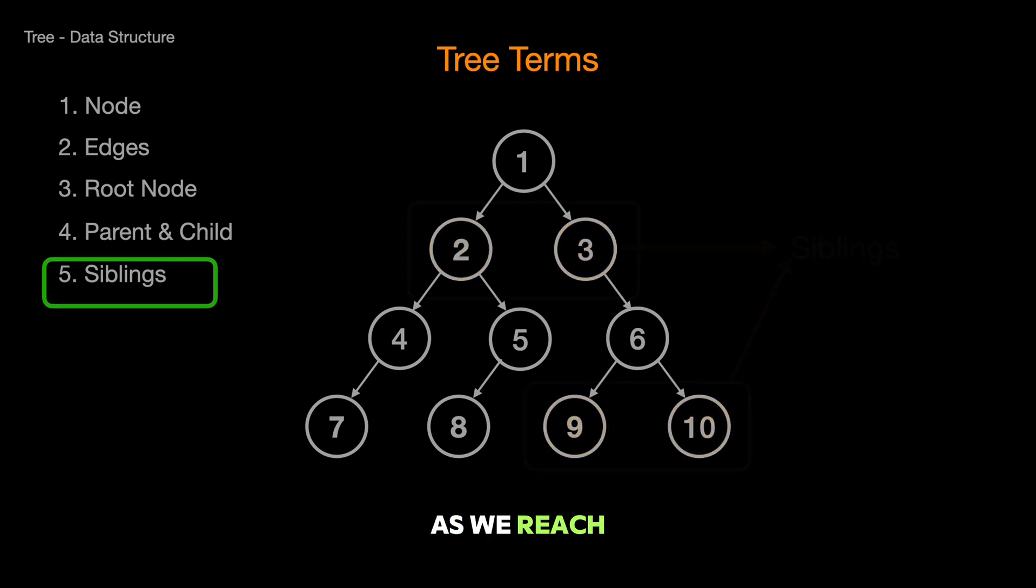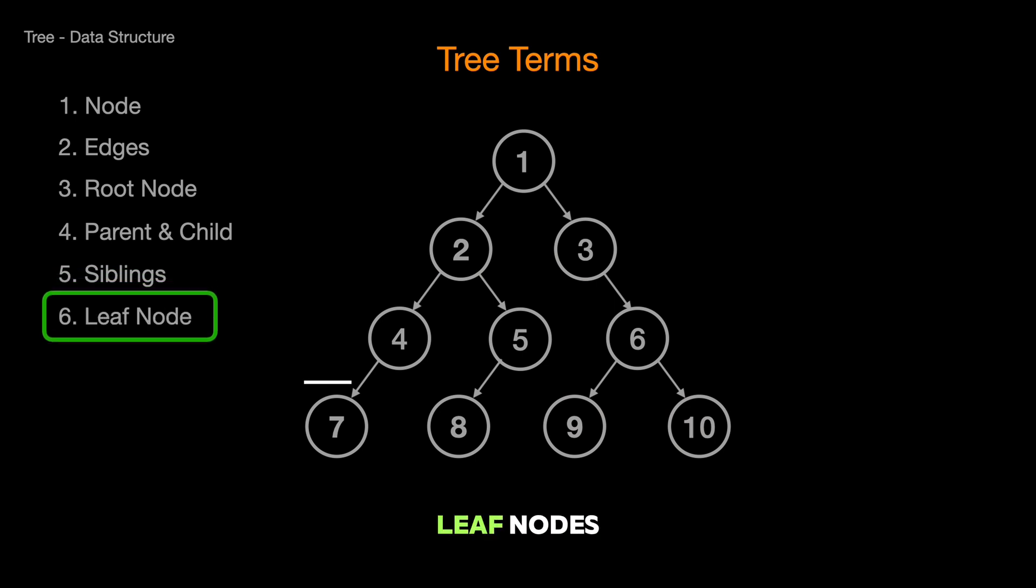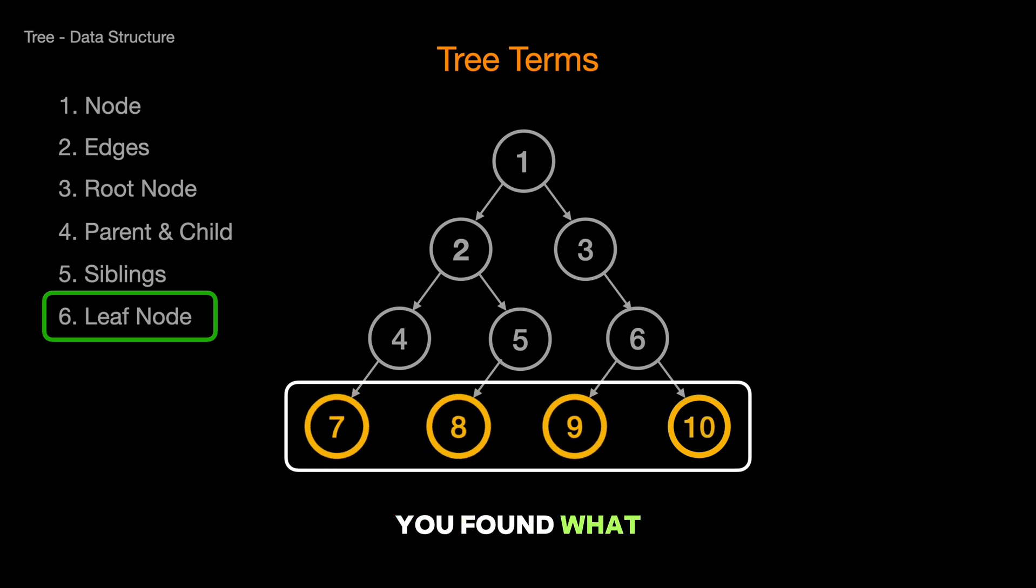As we reach the ends of our tree, we find the leaf nodes. When you reach a node that doesn't have any children, you've found what we call a leaf node. Just like the leaves on a real tree, these are at the ends and don't support any further growth.